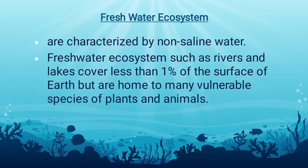Freshwater ecosystems are characterized by non-saline water, or water without salt. Freshwater ecosystems such as rivers and lakes cover less than 1% of the surface of Earth but are home to many vulnerable species of plants and animals, including 41% of all species of fish.